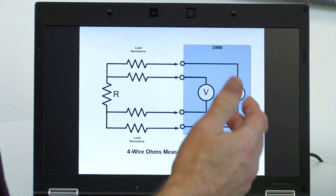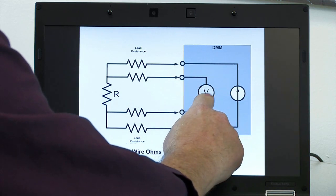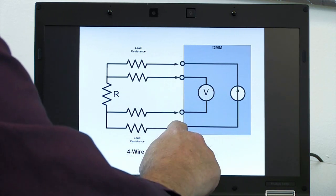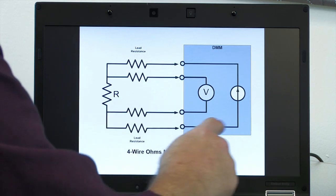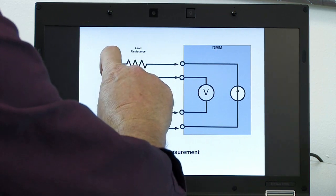So the way we solve that using four-wire ohms is that we break out the voltage measurement from the current source and actually use four wires to connect to our unknown resistor. The current still flows through this outside path and generates three different voltages.